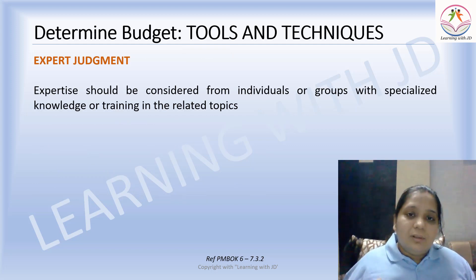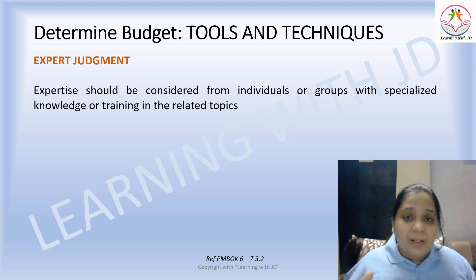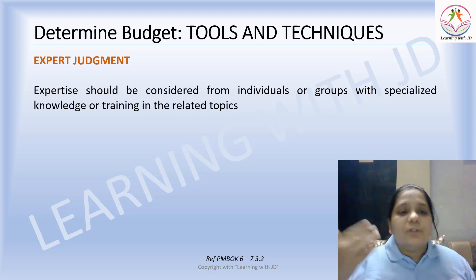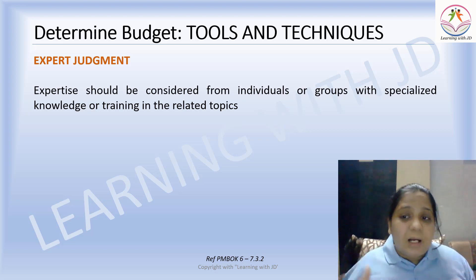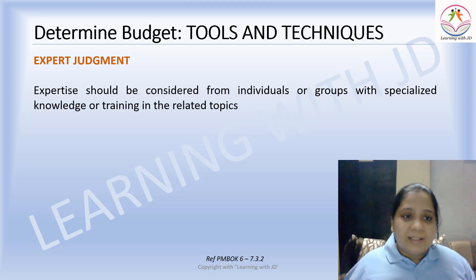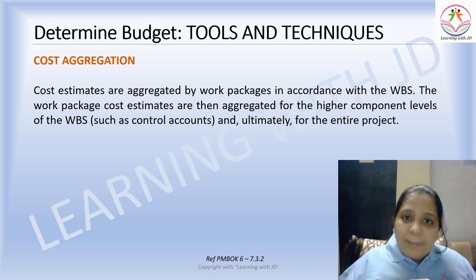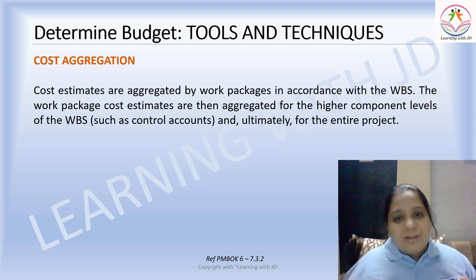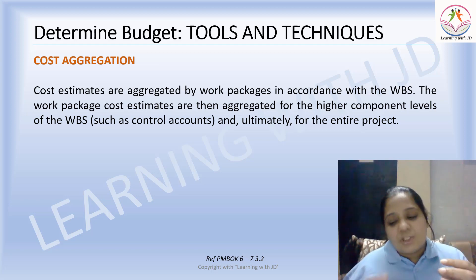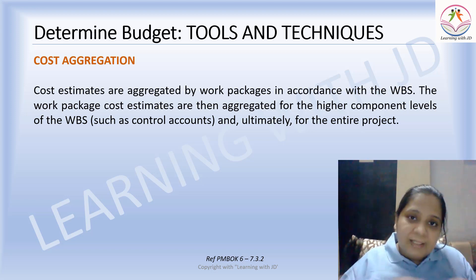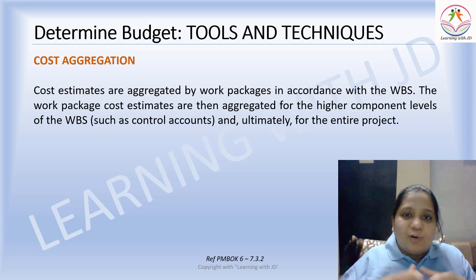Once you have all these documents, you apply tools and techniques. The first is expert judgment — you can call experts who specialize in identifying budgets. Then there is cost aggregation: cost estimates are aggregated by work package in accordance with the WBS. Work package cost estimates are then aggregated for higher WBS components and ultimately for the entire project, giving you your complete project budget.